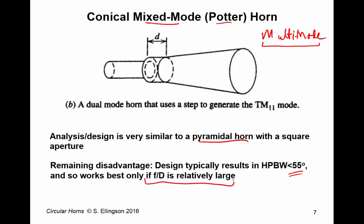Now, what happens if you don't have a relatively large F over D? Well, then you make compromises. So, there's all kinds of ways that you can modify this design approach to get performance similar to what we're talking about here in terms of emulating a Huygens source. I'll mention a few of those in just a moment.